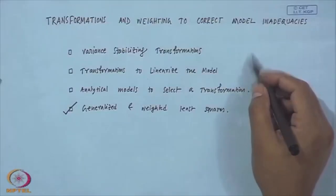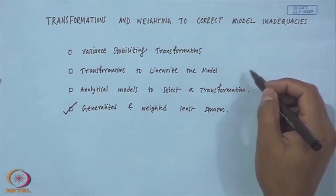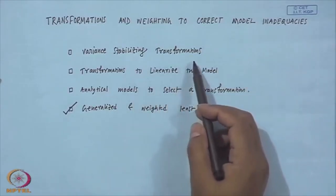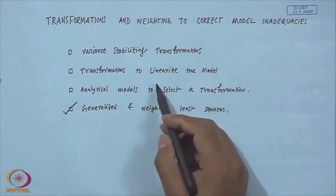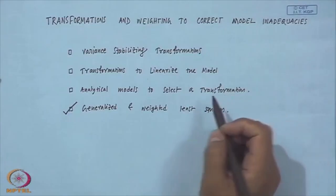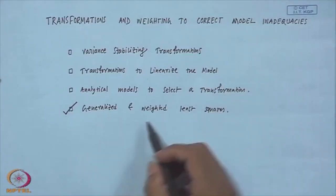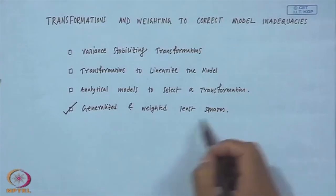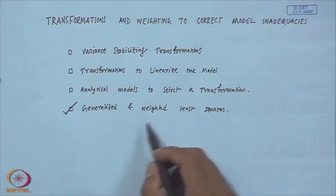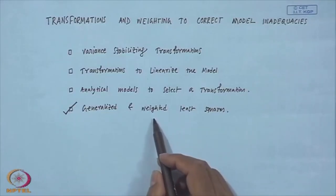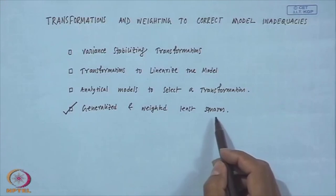This is the third lecture on transformation and weighting to correct model inadequacy. We already talked about variance stabilizing transformation, transformation to linearize the model, and generalized and weighted least square. Today I want to give an example to illustrate the weighted least square technique we talked about in the previous class.